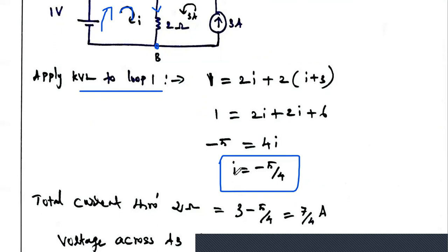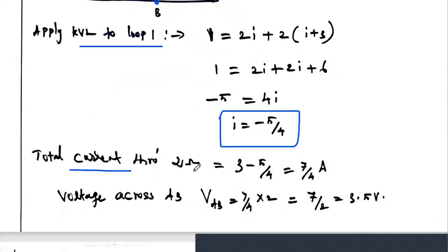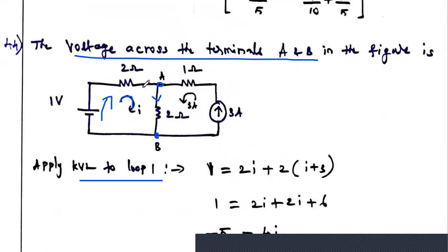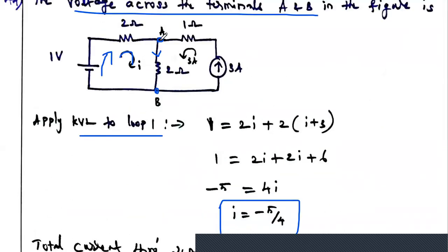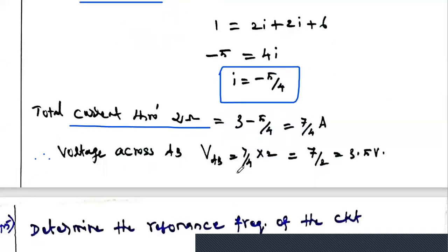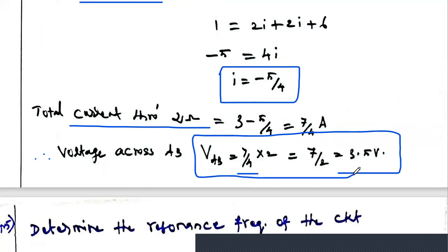Current I equals minus 5 divided by 4. The negative sign means the current is flowing in the opposite direction. Now the total current through the 2-ohm resistor is I plus 3 amps: that is minus 5/4 plus 3, which gives 7/4 amps. Therefore, the voltage across terminal A and B is Vab = (7/4) × 2 = 7/2 = 3.5 volts. That is the answer — the voltage across terminal A and B is 3.5 volts.